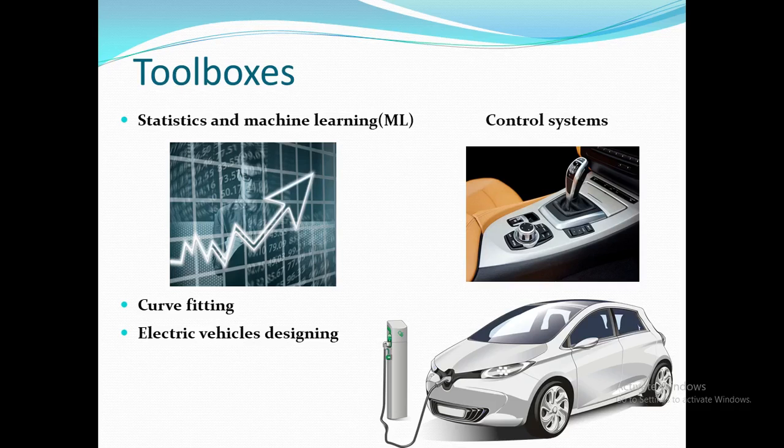Electric vehicle designing: the modeling and design of electric vehicles can be done, and the speed or comparison of a motor can also be evaluated using these tools. Control systems: the nature of a system, open loop and closed loop stability, observability, controllability, Bode plot, and Nyquist plot can also be done. Controlling techniques such as PI, PID, and PD can also be visualized.